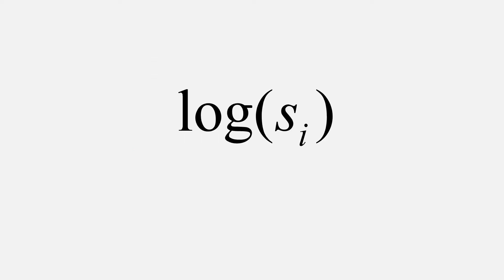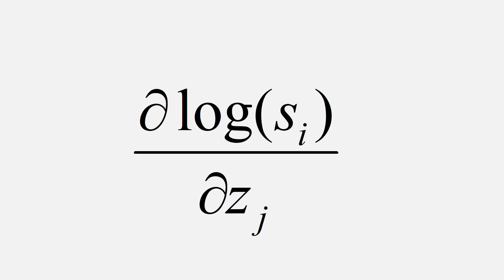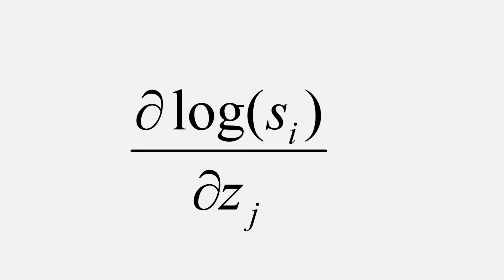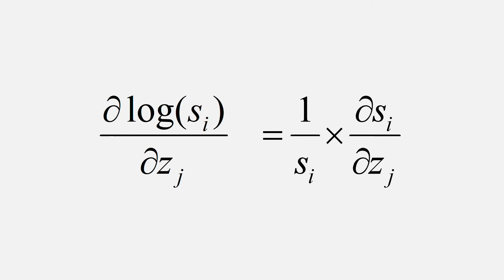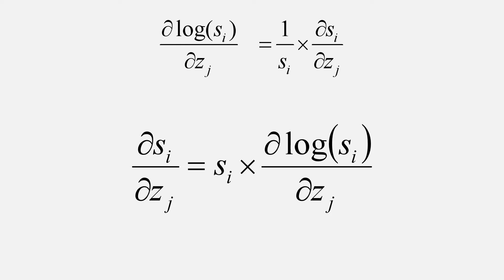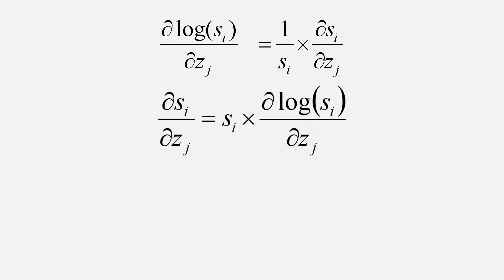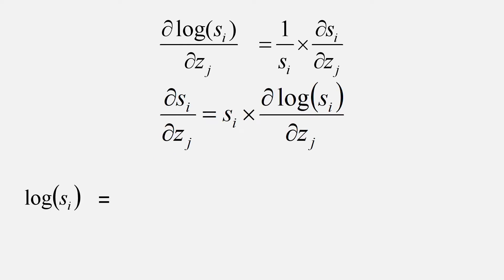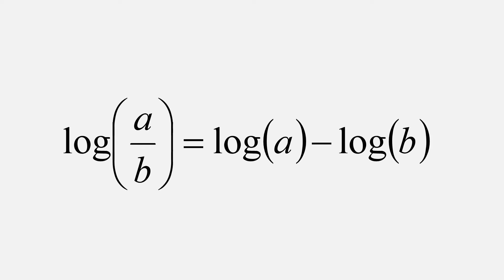To do that, we first take the log of the softmax and then find its derivative. So the partial derivative of log(s_i) with respect to z_j equals (1/s_i) · (∂s_i/∂z_j). Rearranging, we get this expression. Then we substitute the value of log(s_i) on the right-hand side. We know that log(a/b) equals log(a) minus log(b).